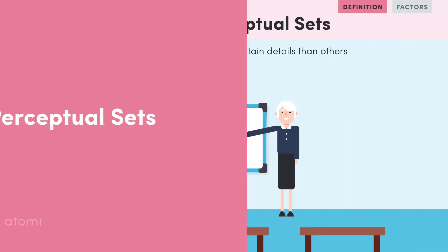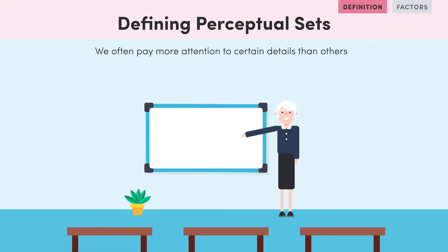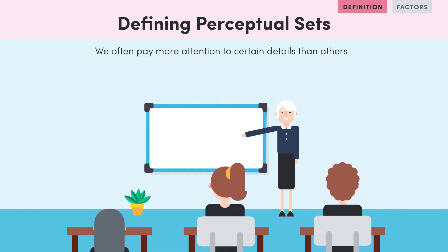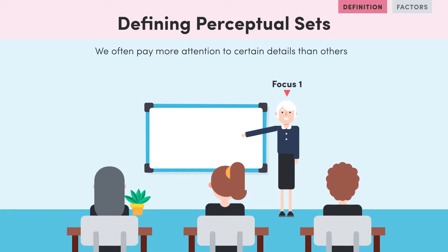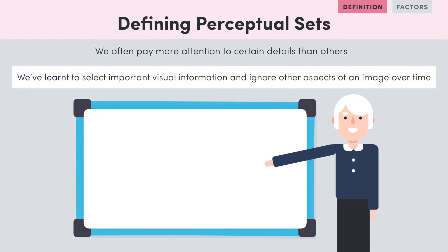So when we look at something, we often pay attention to certain details more than others. For example, when we sit down in a classroom, we instinctively look at our teacher and the whiteboard at the front, rather than at a blank part of the carpet or wall. This is because we have learnt to select important visual information and ignore other aspects of an image over time.